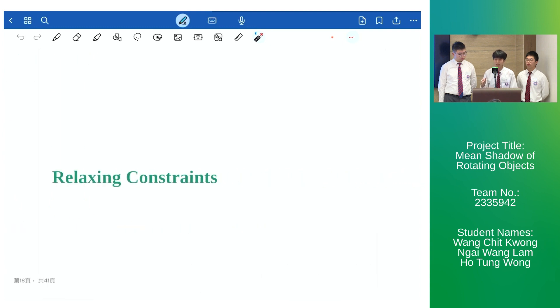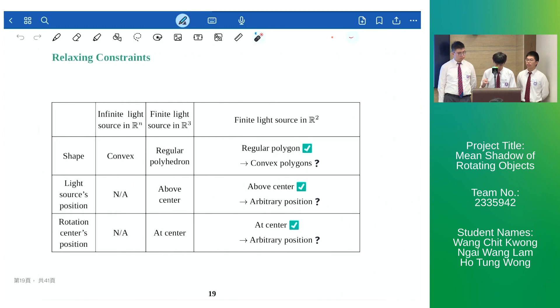Having completed the 2D analog of Egan's work, it's time for us to relax the constraints imposed on the system. From the table below we can observe that for the case of finite light source there are still many limitations. The shape is limited to regular polygons, the light source position confined to be above the center of the polygon, and the rotation center is confined to be at the center of the polygon.